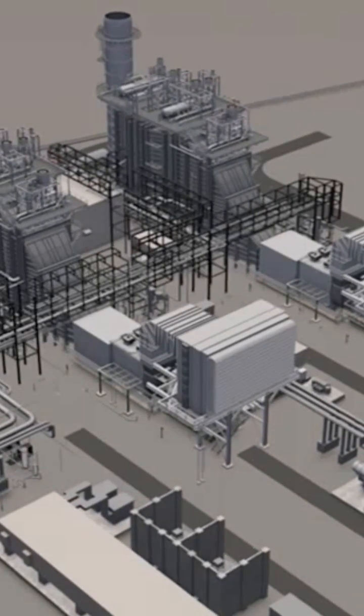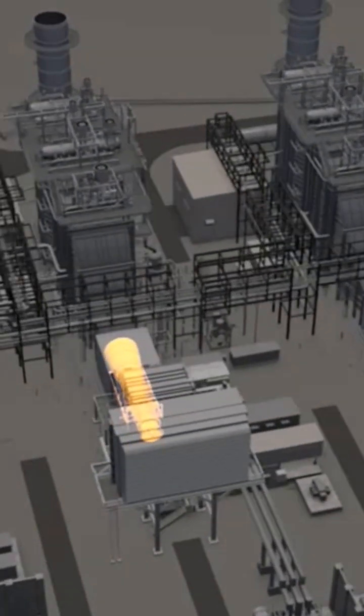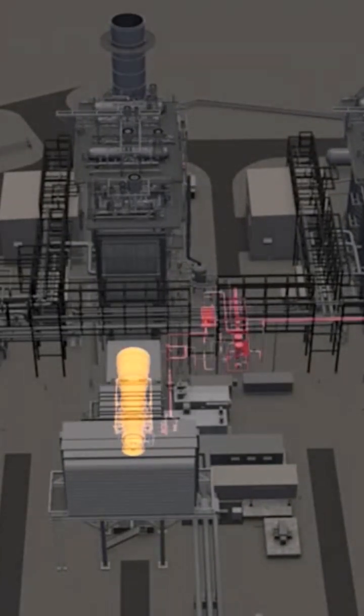A combined cycle facility is an assembly of gas and steam turbines that work in tandem from the same source of heat. This heat is initially provided by combustion of natural gas.